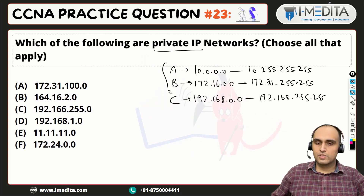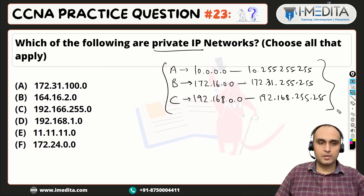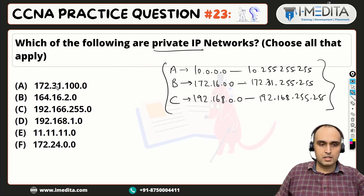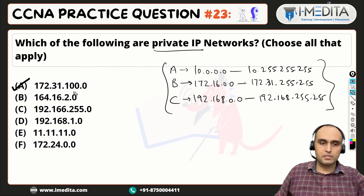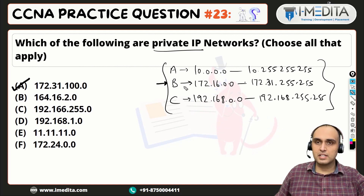Once we know the ranges of private IP, we can easily figure out which IP is private. Option A is 172.31.100.0 — this definitely comes within the Class B range, so it's a private IP.